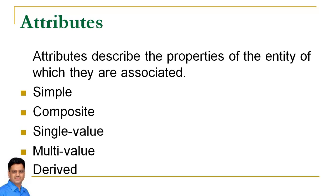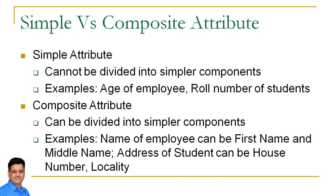These five types are: simple, composite, single value, multivalue, and derived attributes. Let's understand each type one by one. Starting with simple and composite attributes — a simple attribute is one which cannot be further divided into simpler components.